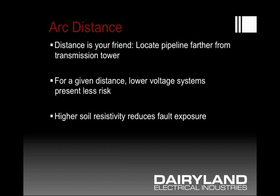What the arc distance graph tells you is that distance is extremely helpful. You would want to locate your pipeline, if you have the choice, further away from a transmission tower to reduce any possibility of arcing. Lower voltage systems, such as distribution power lines, have a lower risk associated with them. But don't be fooled — AC mitigation and AC induction relate to current flow, so there can still be significant induction on a pipe even from a distribution system. Considering just the arc distance problem, lower voltage class systems have lower risk. Also, increased soil resistivity reduces fault exposure, as the soil is not as conductive.